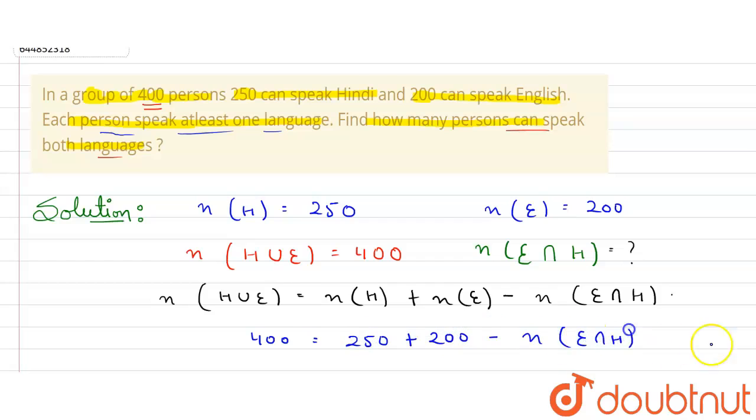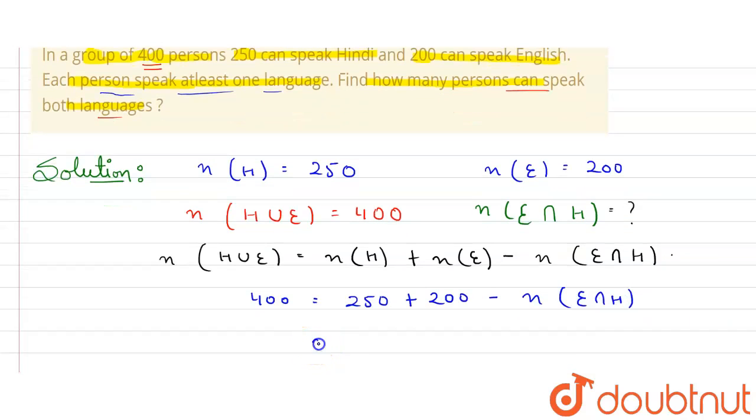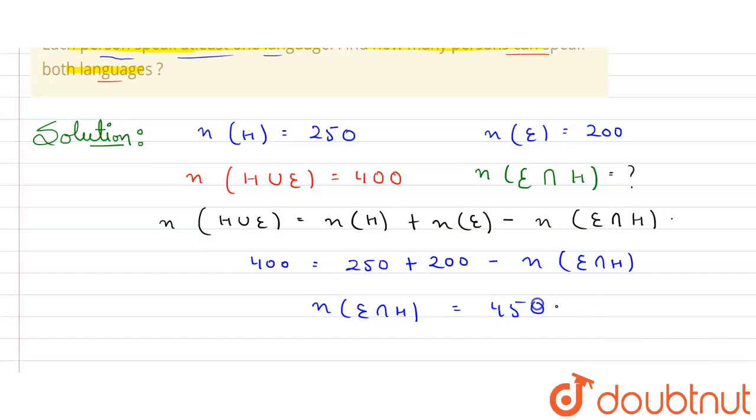So from here, just shift this to the other side and it will be 250 plus 200 is 450 and minus 400 here. So people who can speak...